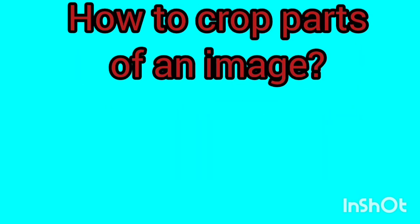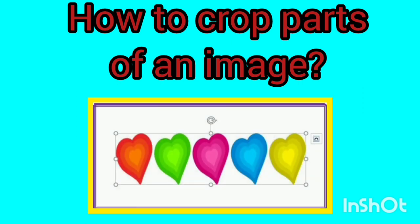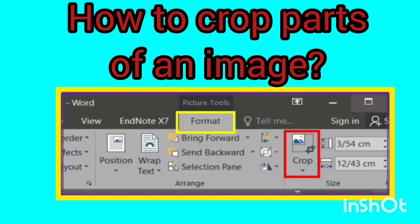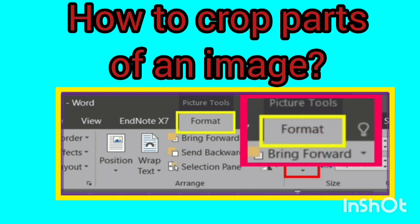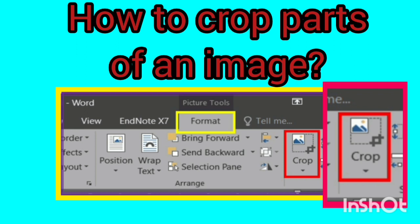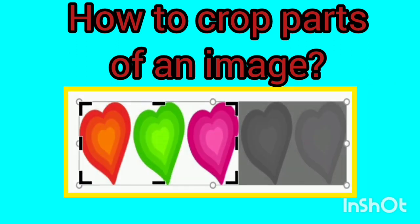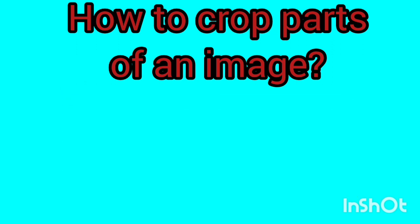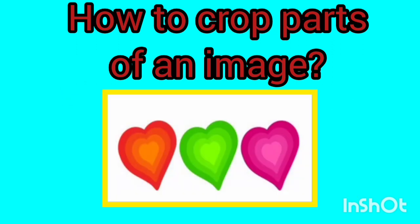Dear children, we want to learn how to crop parts of an image. Click on the image once to select it. Then by selecting the image, the Format tab will be shown automatically, which I marked with a yellow box. Click on the Crop icon marked with a red box. Crop handles will appear around the image frame — click on these handles and drag until only the desired content remains. Finally, press the Enter key on the keyboard to keep the image stable.